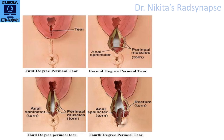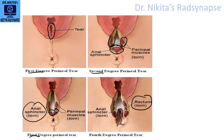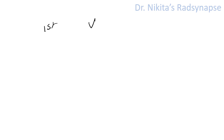Here is one more image for reinforcement. Confined to the vagina — first degree tear. Perineal muscles involved, anal sphincter intact — second degree tear. Anal sphincter also involved but not extending inside to the epithelium or rectal mucosa — third degree tear. Anal sphincter gone and extending inside to the rectum as well — fourth degree tear. To summarize: first degree is vaginal mucosa, second degree is perineal muscles, third degree is the anal sphincter, fourth degree is the rectal mucosa or anal epithelium.